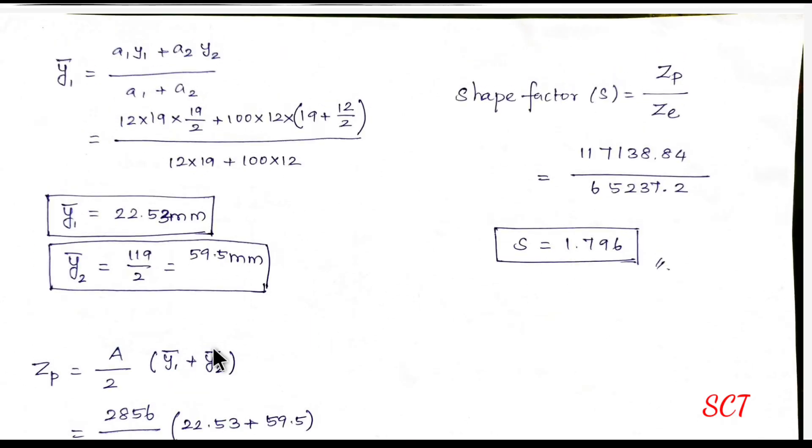the shape factor is a question. The shape factor is equal to ZP by ZE. 117138.84 divided by 65237.2. That is ZP and ZE value. ZP is equal to 1.796.